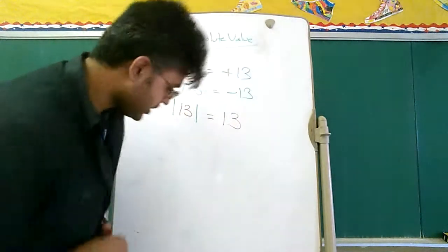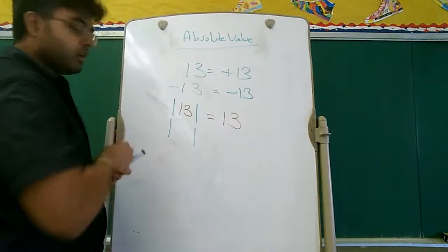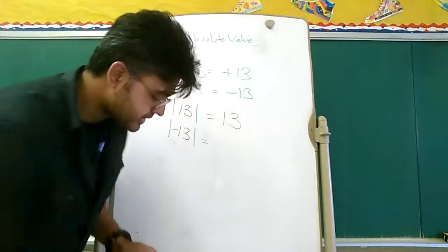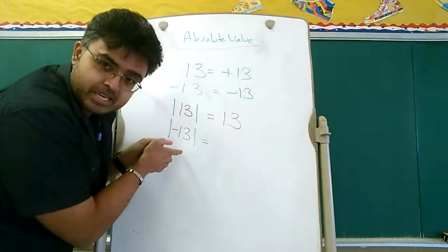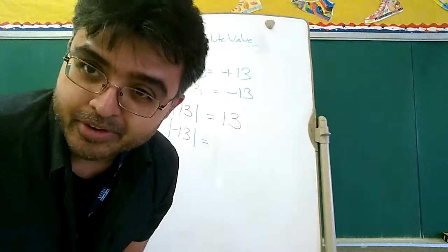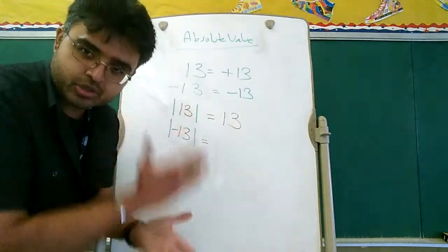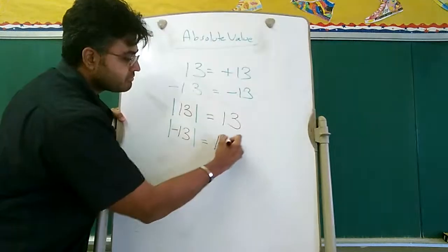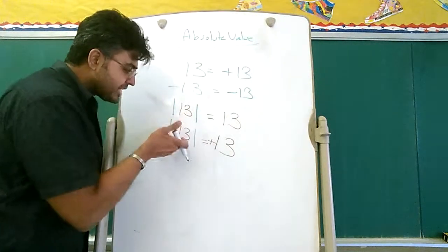But this is where it starts to change. What is the Absolute Value of minus 13? The whole purpose of Absolute Value is to change this mean, old, nasty, negative number into a happy, smiling, positive number. That is the only reason for the existence of Absolute Value — it hates negative numbers and it wants to turn them into positive numbers. Therefore, the Absolute Value of a negative number becomes a positive number. That's what Absolute Value is.